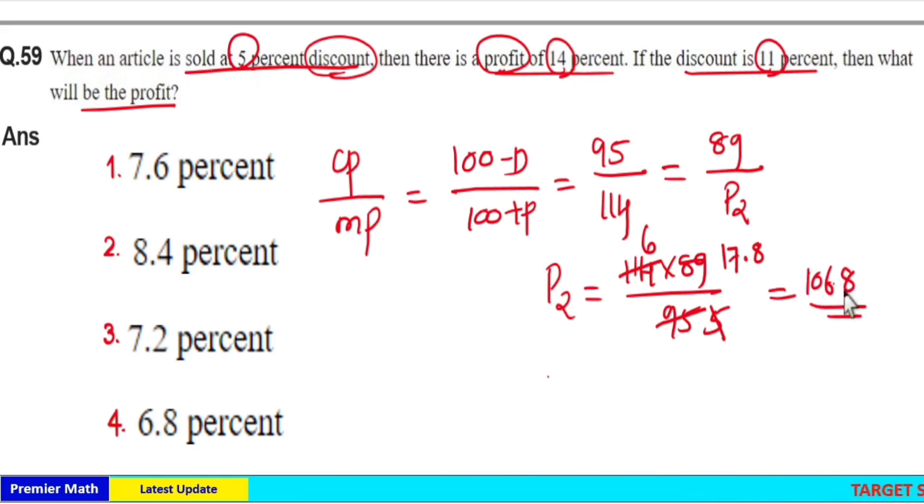Which means here 100 plus P is equal to 106.8. Then profit is equal to 6.8 percent, option 4 is your answer.